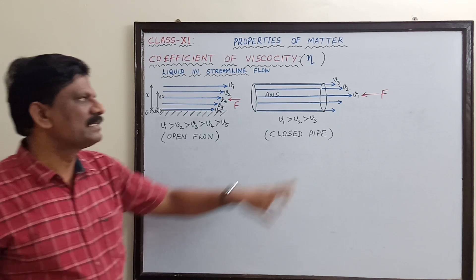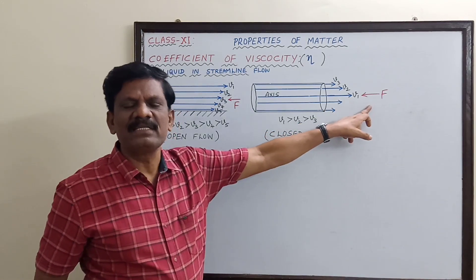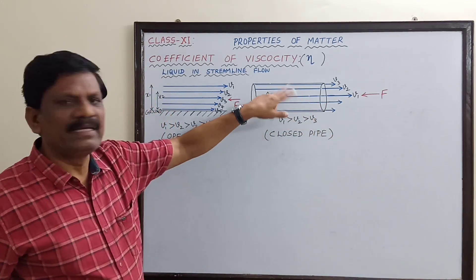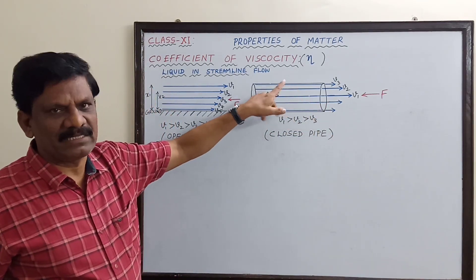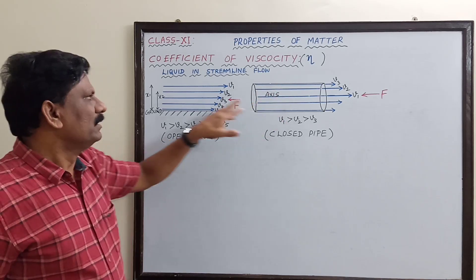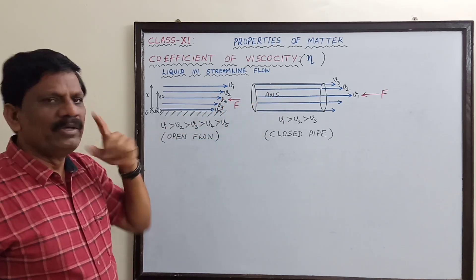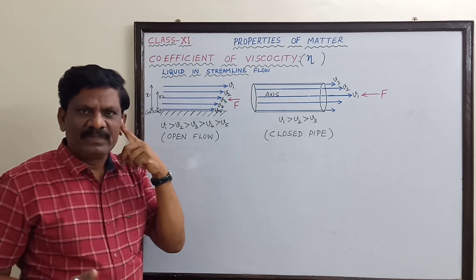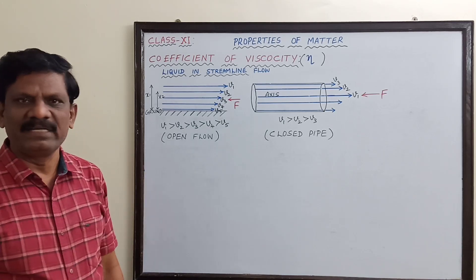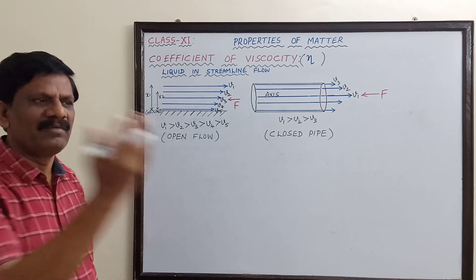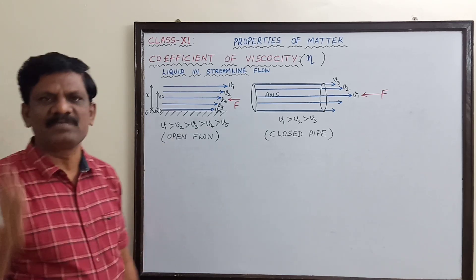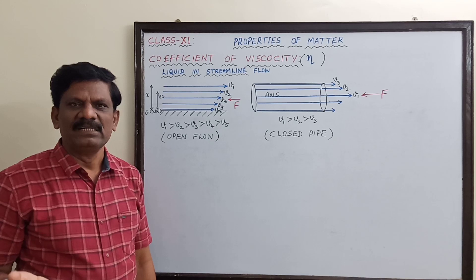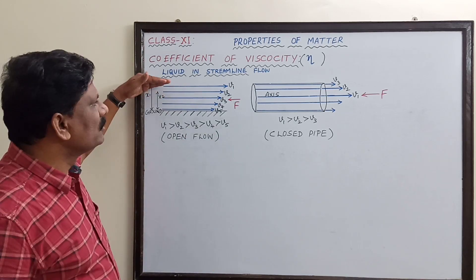Viscous force is the opposing force between any two layers in contact. Now, what do we mean by relative motion here? The velocity of one layer with respect to the other layer — the first layer is going to